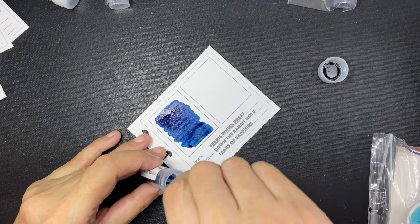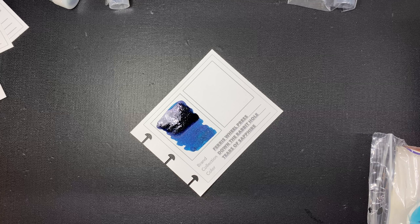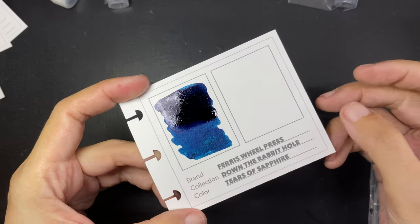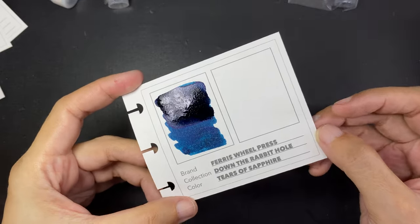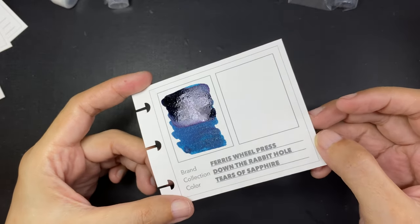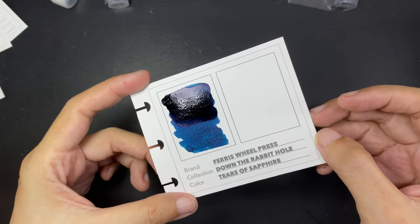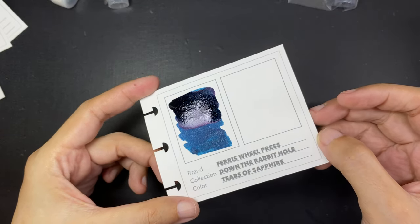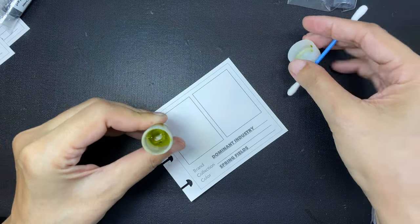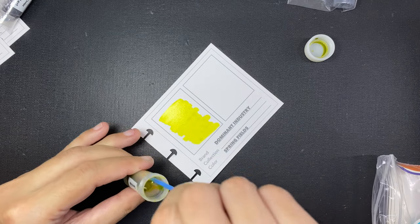Here we have Ferris Wheel Press Tears of Sapphire. And this is Dominant Industry Springfields.